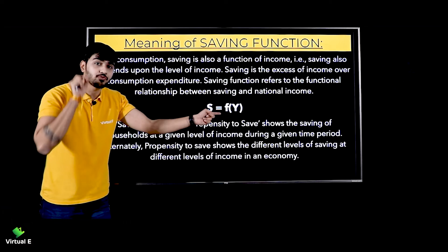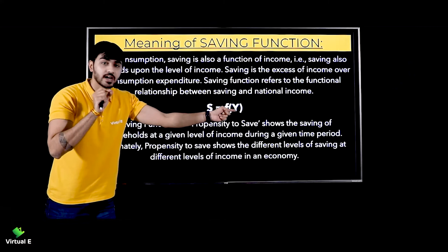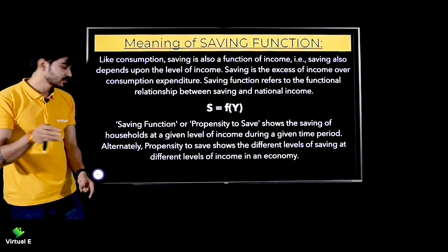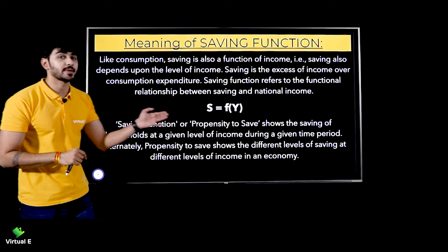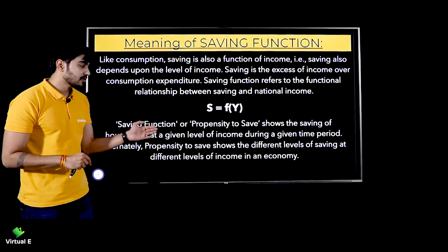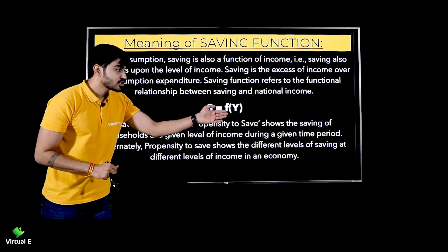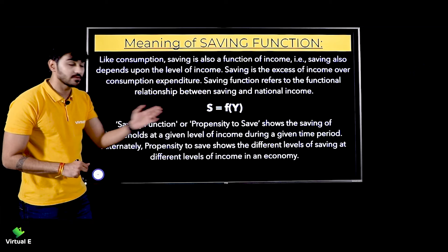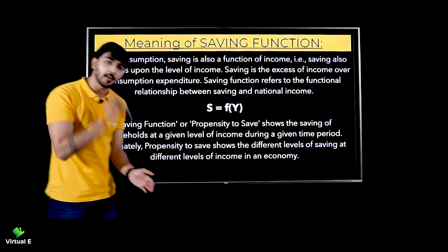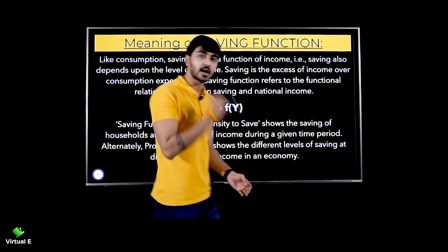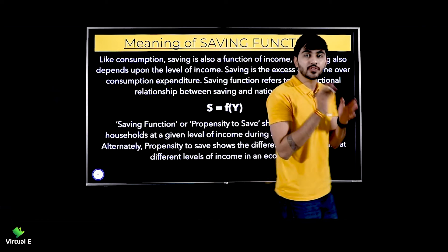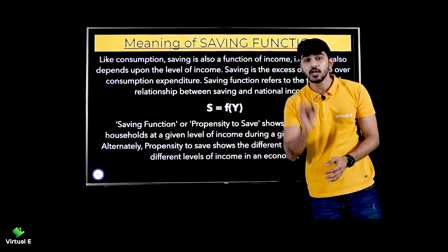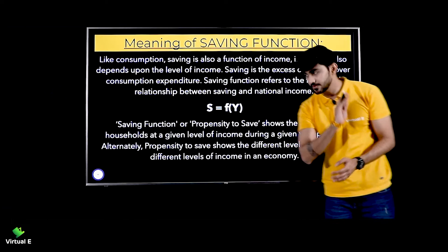The saving function refers to the functional relationship between saving and national income, that means S = f(Y), where Y is your national income. The saving function or propensity to save shows the saving of households at a given level of income during a given time period — that means at the current level of income, how much have households saved.